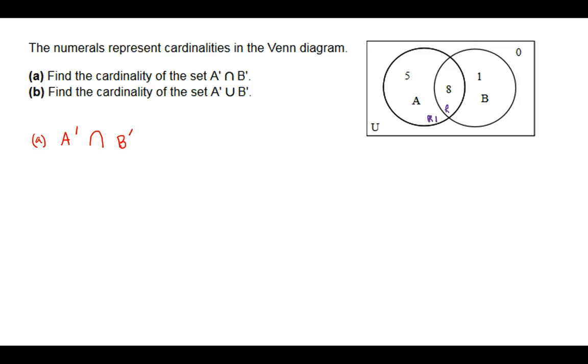We have region 1, who is A only, region 2, who is the intersection, region 3, who is B only, and region 4, who is outside of all the sets A and B.